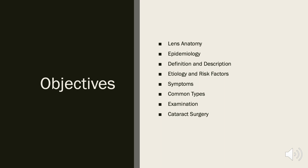The objectives of our talk include the anatomy of the lens, epidemiology of cataracts, the definition and description of cataracts, the etiology and risk factors for cataract development, symptoms of cataracts, a quick review of common types of cataracts, the examination of a patient with suspected cataracts, and briefly we'll cover cataract surgery.